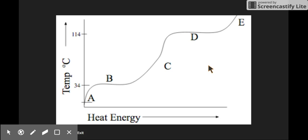So your homework asked some specific questions about this. It said where is the substance only solid? That would be here at A. Where is it only liquid? It's only a liquid in this zone at C. Where is it only a gas? It's only a gas up here at E. Where is the melting point? The melting point is here at B. Where is the boiling point? D.